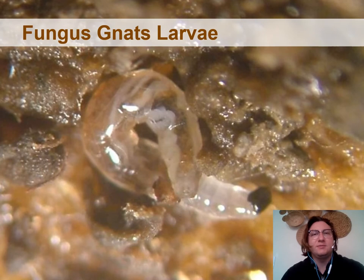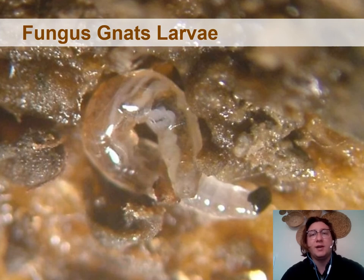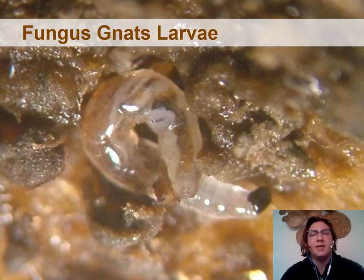Moving on to fungus gnats, we see them in typically two life stages: the larval and adult form. The larval stage, as you can see in this photo, looks like a small, clear to translucent to whitish-green color, with a distinctive black head capsule. They can be seen with the naked eye and like to feed on root systems, so it is very important to routinely pop out plants from their trays and containers to see if this pest is present. A good diagnostic tool is to slice a potato thinly into discs and lay them on the container's soil surface. In a few days, you can come back to see if the fungus gnat larvae have started predating on the potato.